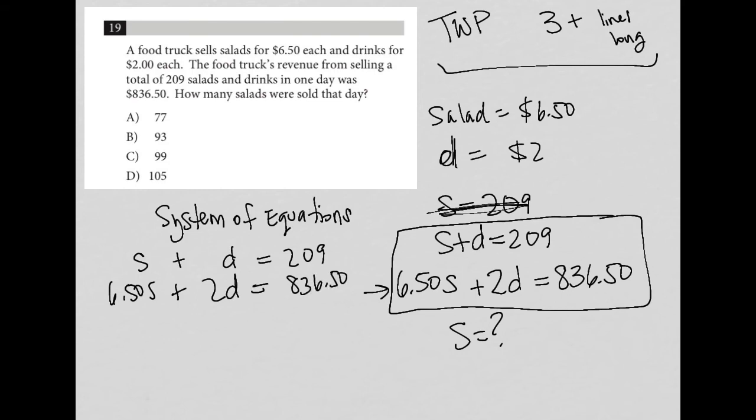And I'm going to decide to use elimination. So I'm going to multiply the top equation by negative 2 so that I can cross out my Ds, my drinks. So I'm going to put a negative 2 here, cross that out. Then it becomes a negative 2 here, cross this out. This becomes a negative 418 because 209 times negative 2 is negative 418.